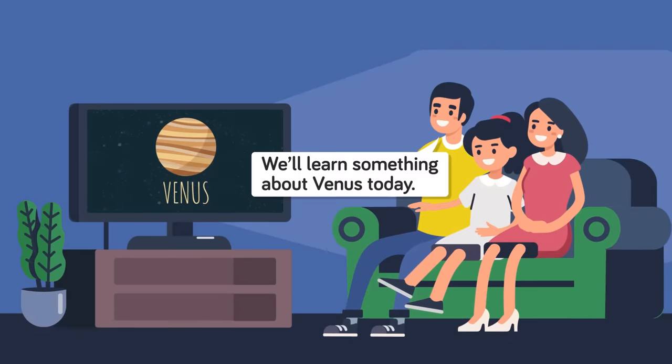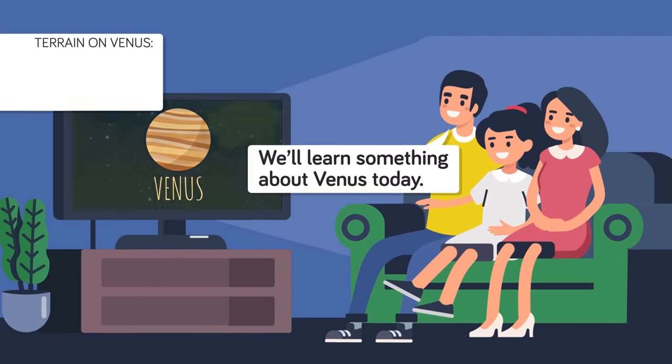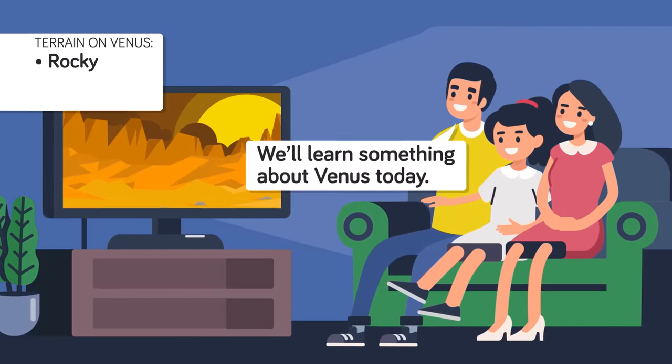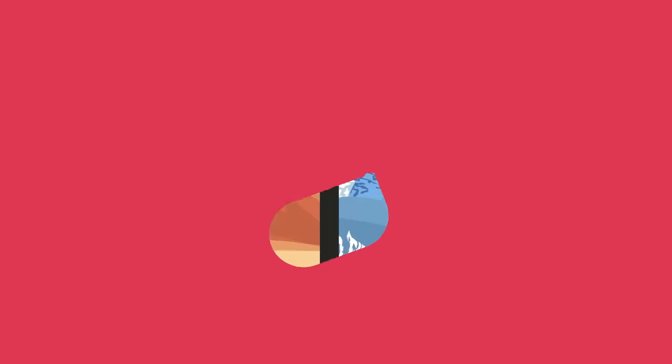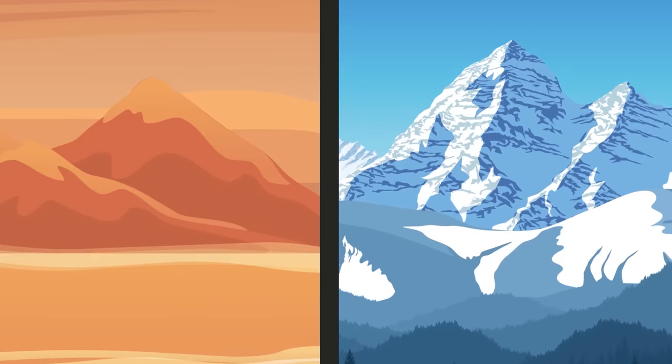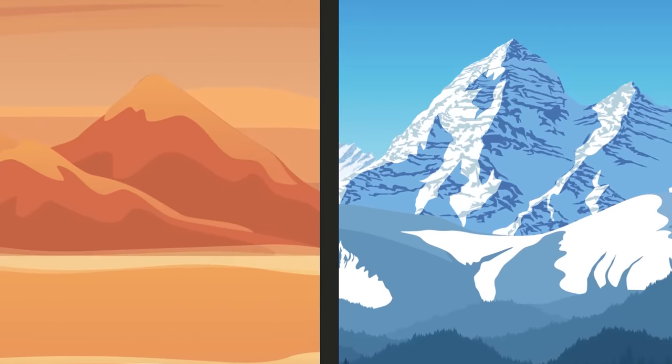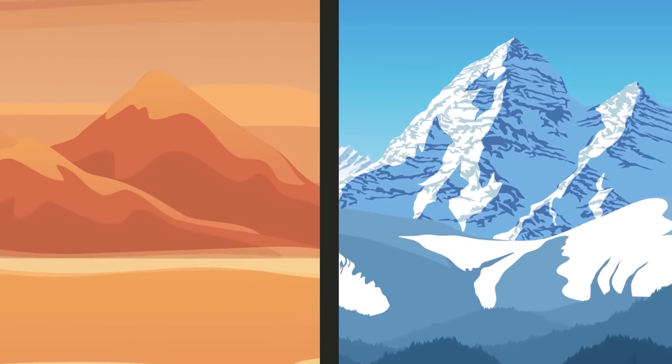What does Venus look like on the surface, you might ask? Well, it's rocky, like Earth, but very barren. There are also lots of volcanoes there, although much of the surface is made up of plains. There are also some highland areas, and the highest mountain on Venus is called Maxwell Montes, named after a Scottish scientist.